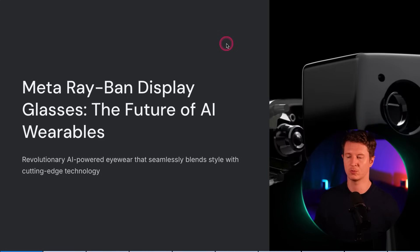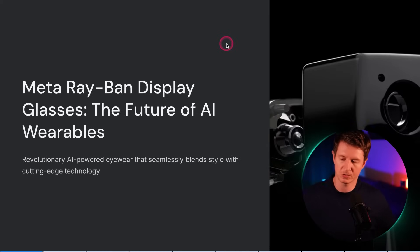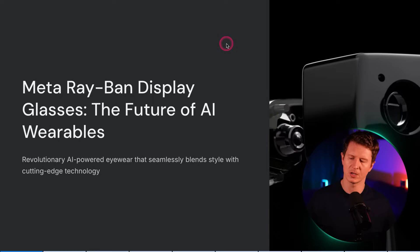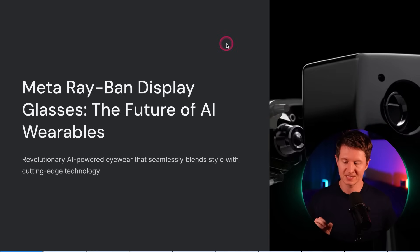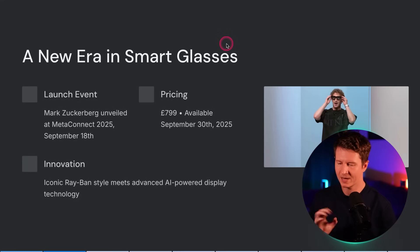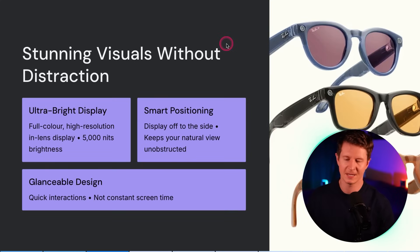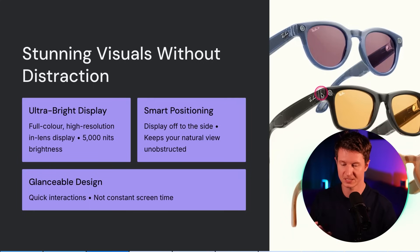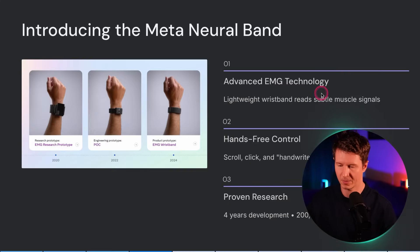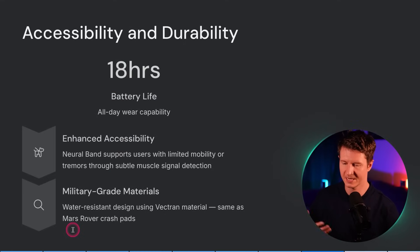Once it's ready you can go ahead and present it. The slide title: 'Meta Ray-Ban display glasses — the future of AI wearables. A revolutionary AI-powered eyewear that seamlessly blends style with cutting-edge technology.' I love the animations it integrates — as you go from slide to slide you get these pop-ups coming in, which are fiddly to do yourself and take a long time to get right. It's drawn in interesting elements like the neural band and even dedicated a whole slide to accessibility and durability. I truly think this is an incredibly useful product and one I use a lot. Let me know what you think of Gamma 3.